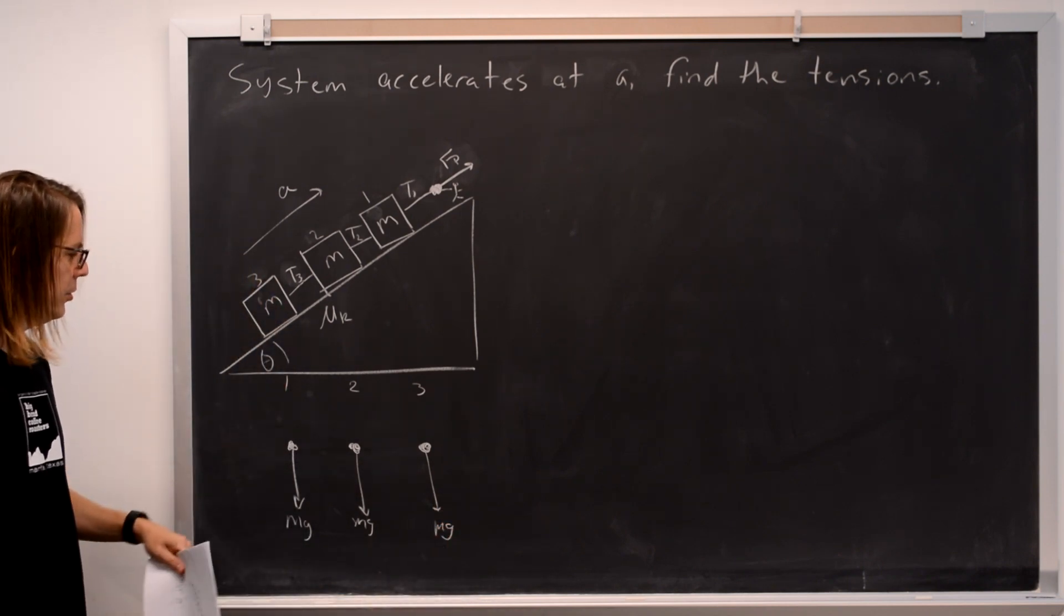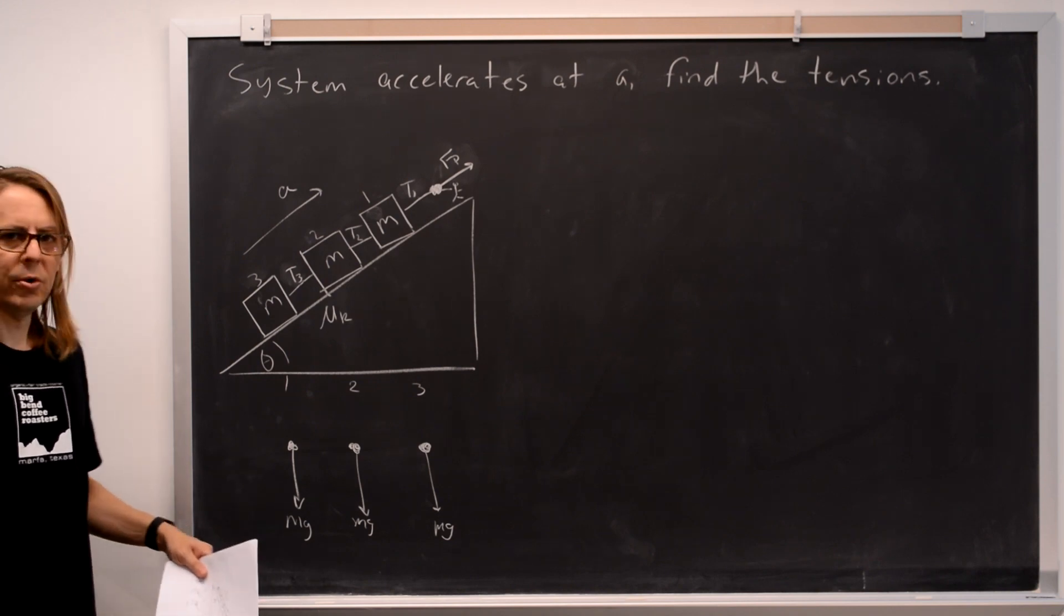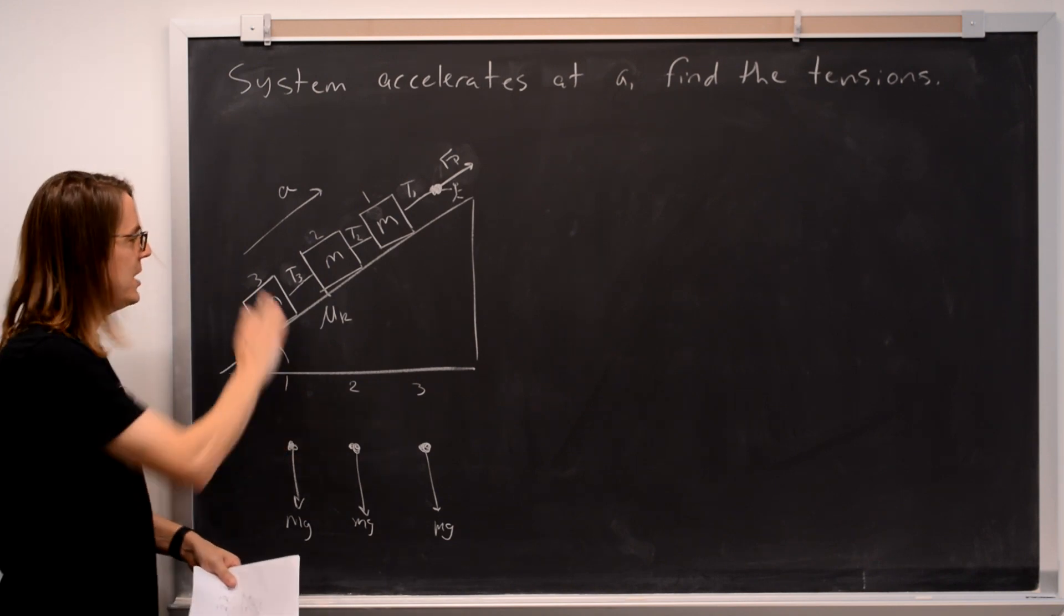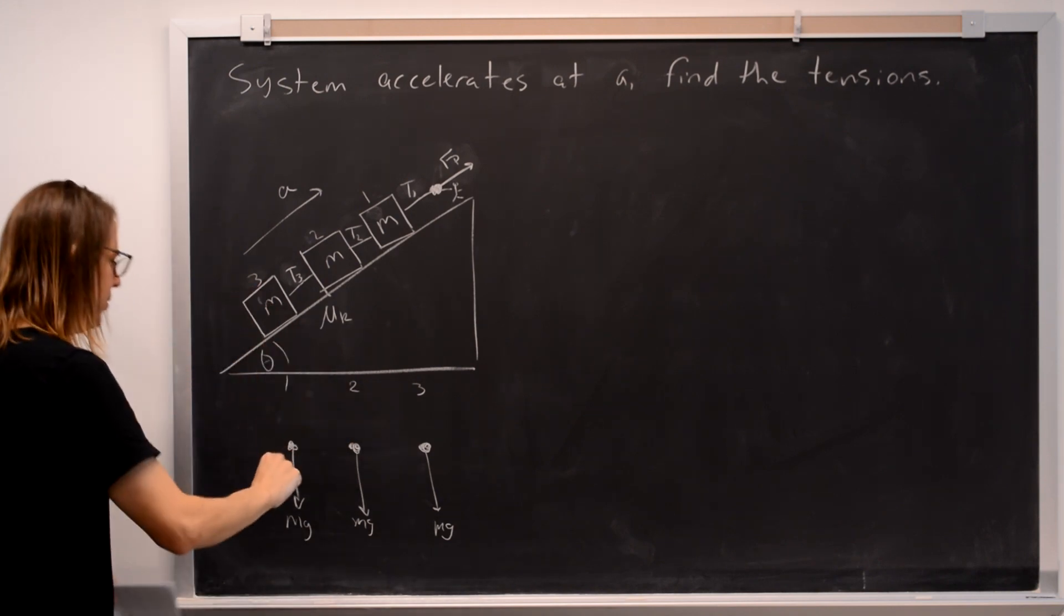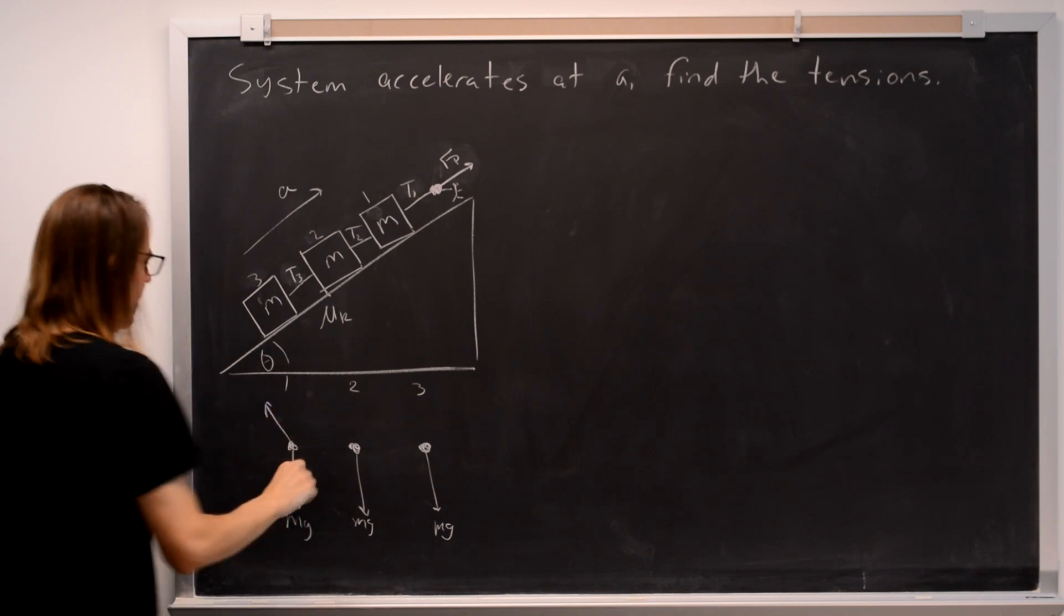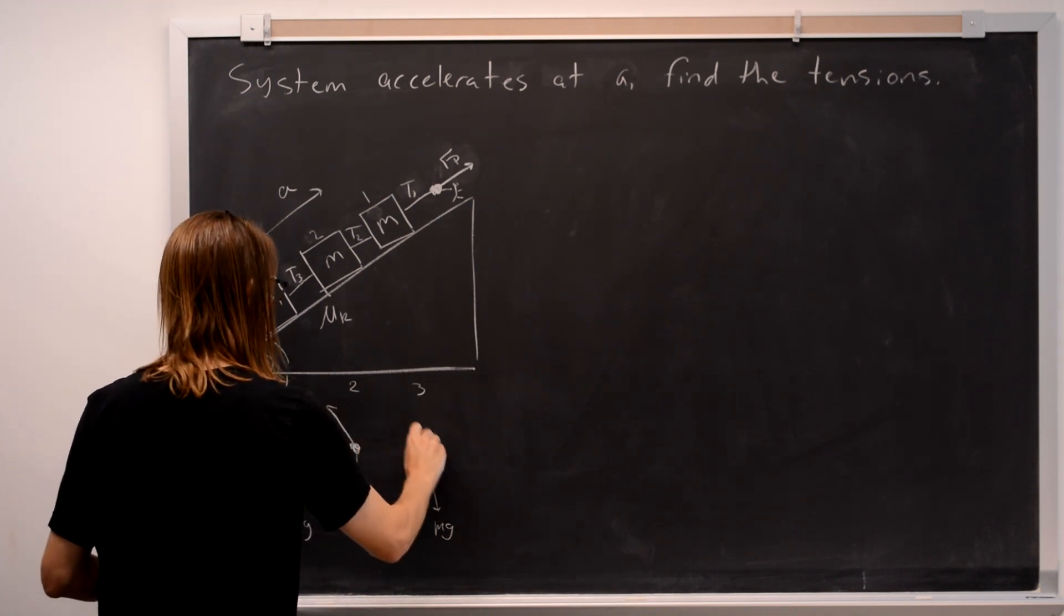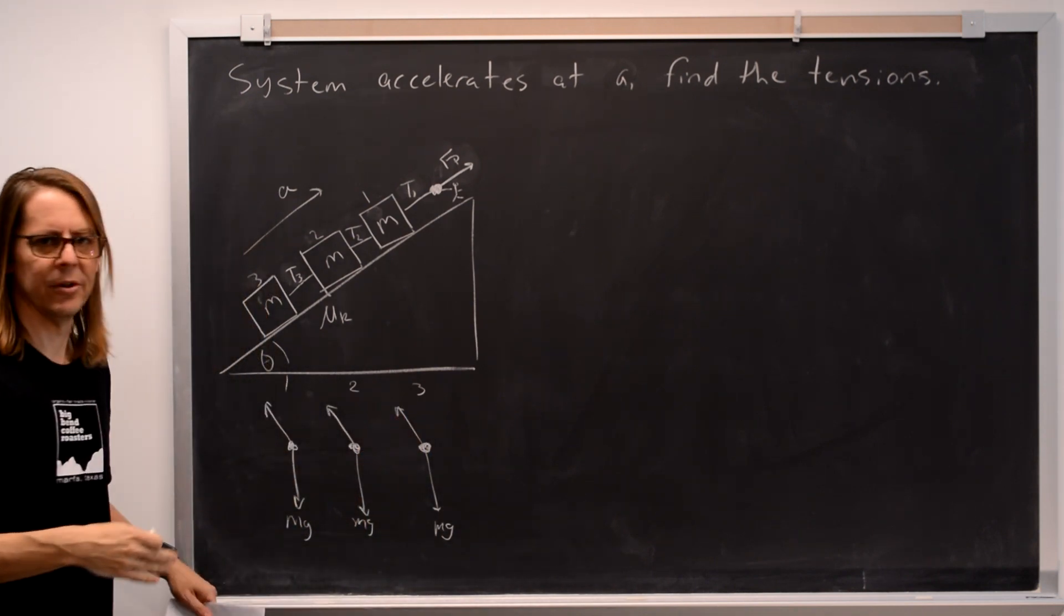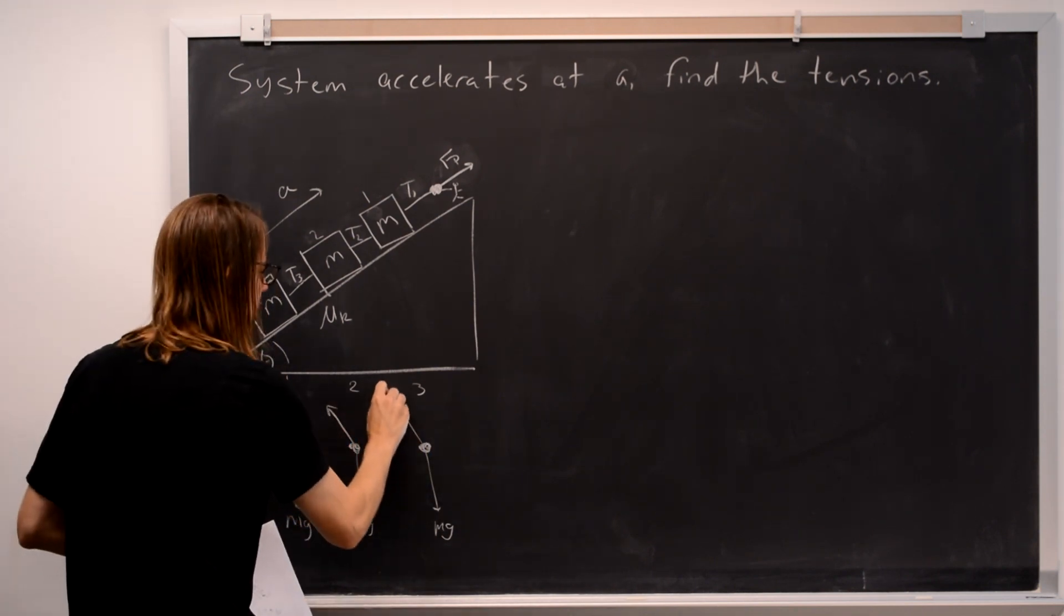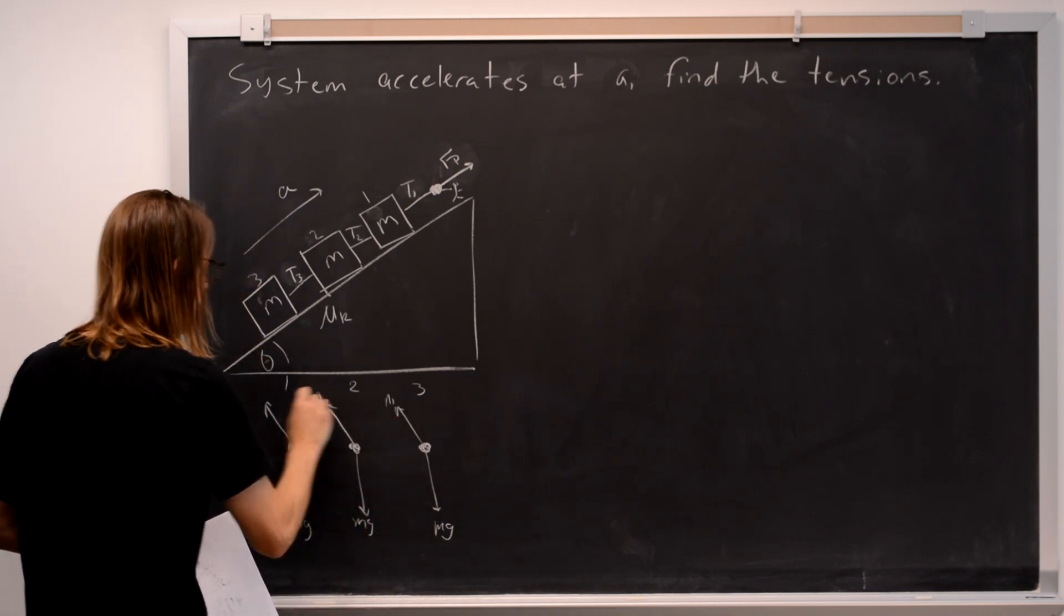The next one we could do would be the normal force. What keeps it from falling through the ramp is the normal force is pushing back up like that. And I'll just call them N1, 2, and 3 because they're all being applied by the surface. So let's say this is N1, N2, N3.